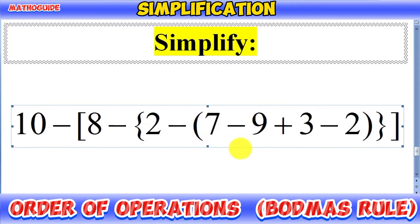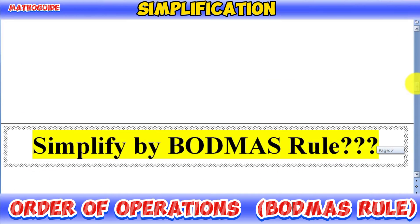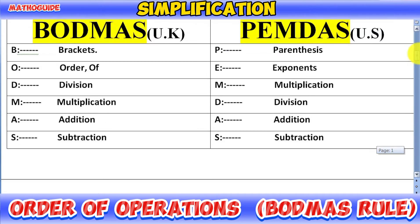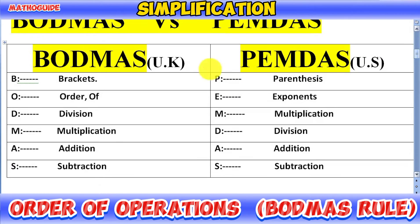First of all, we have to remember that when we have multiple operations, we have to solve them with the help of order of operations. We have a specific rule which is BODMAS or PEMDAS, where you solve all operations in this sequence: brackets, order, division, multiplication, addition, and subtraction, from left to right.